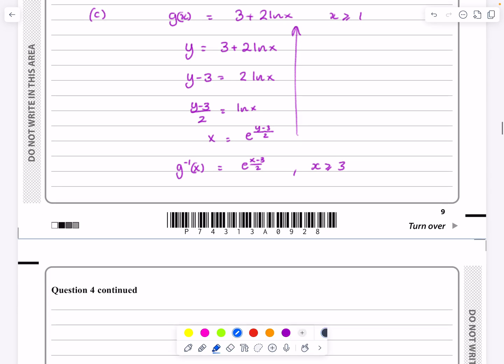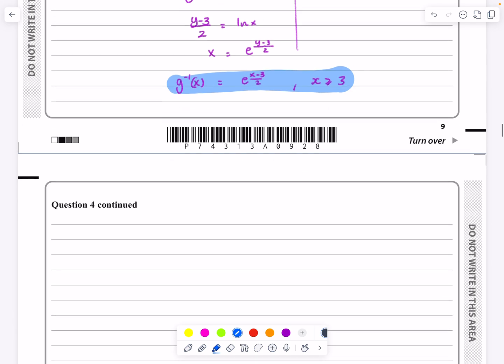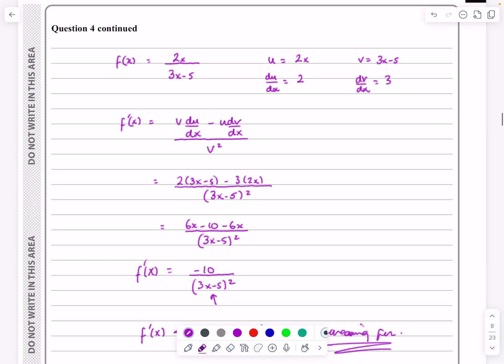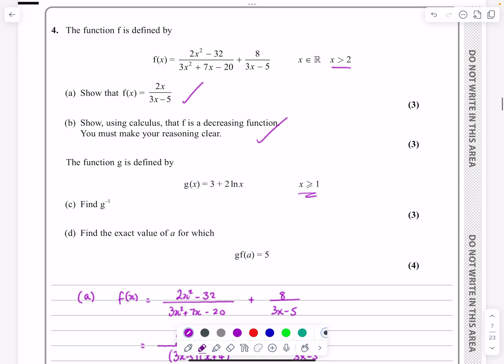So that's the inverse function. So we're finally going to finish off, it's a long video this one, part d, so what did it ask us? It said, there's part c done, part d, can we find the exact value, it will be the exact value for a, for which gfa equals 5.